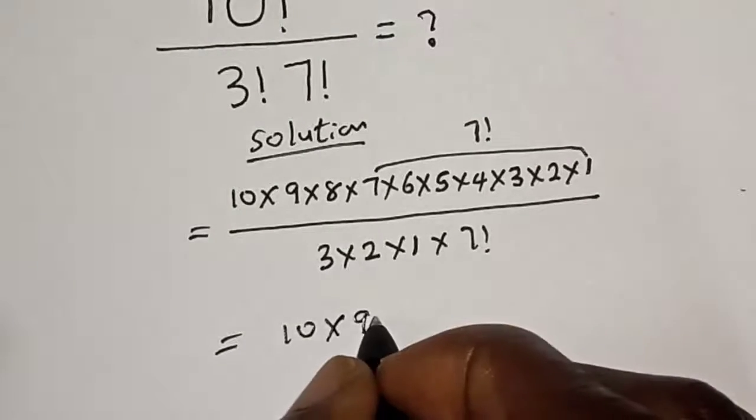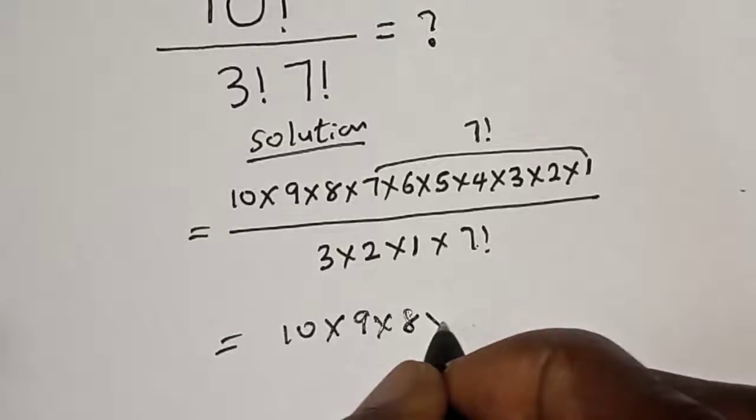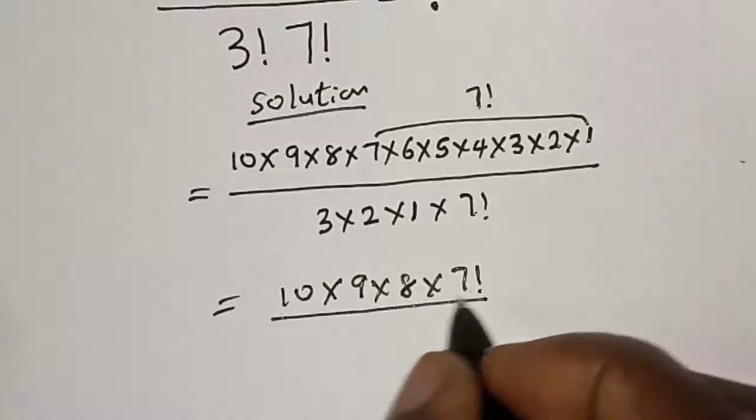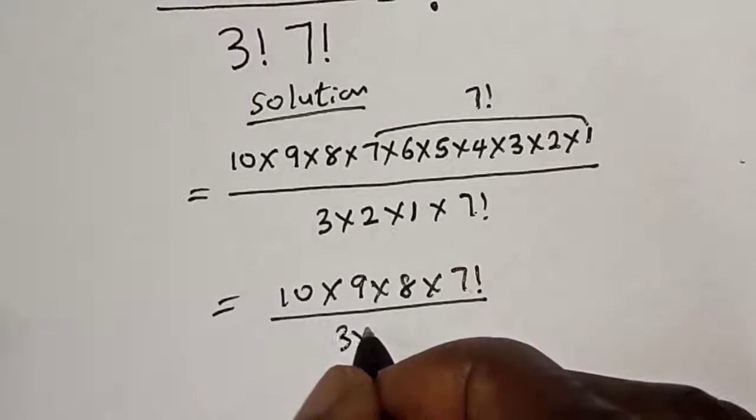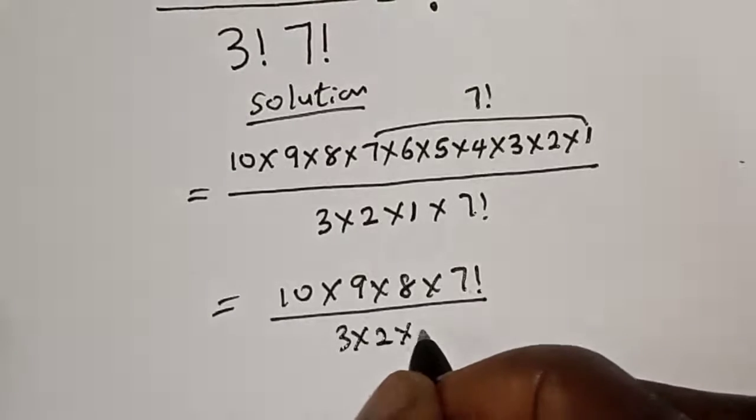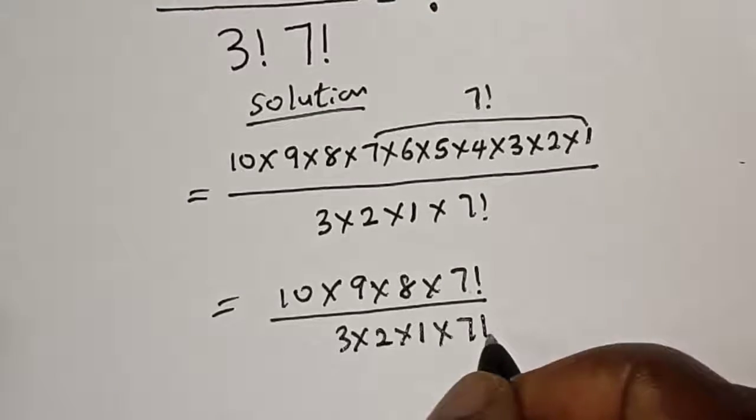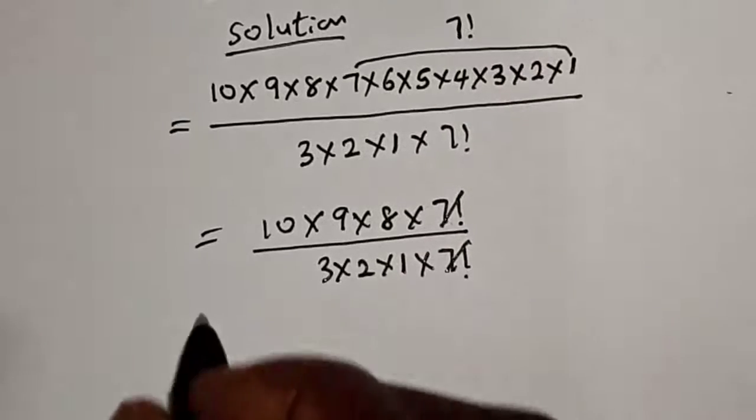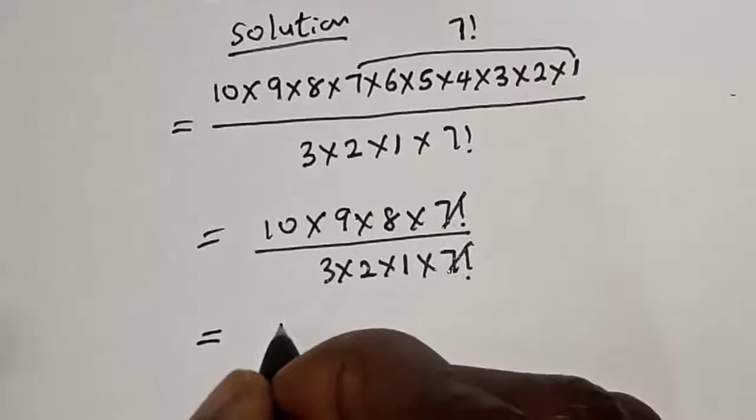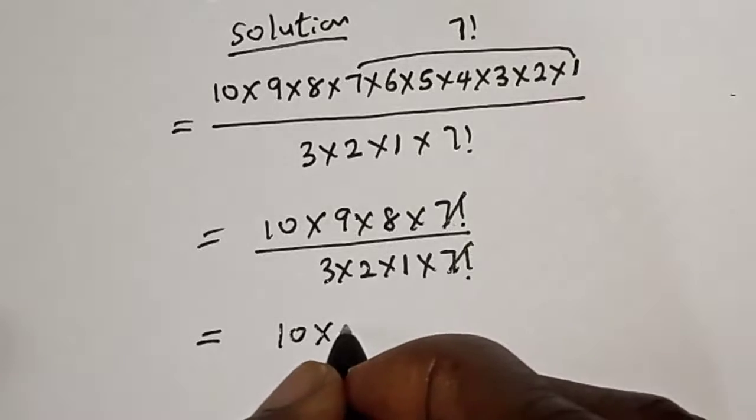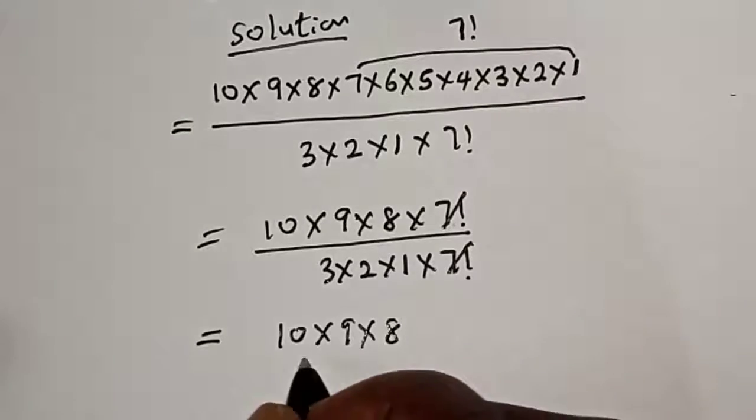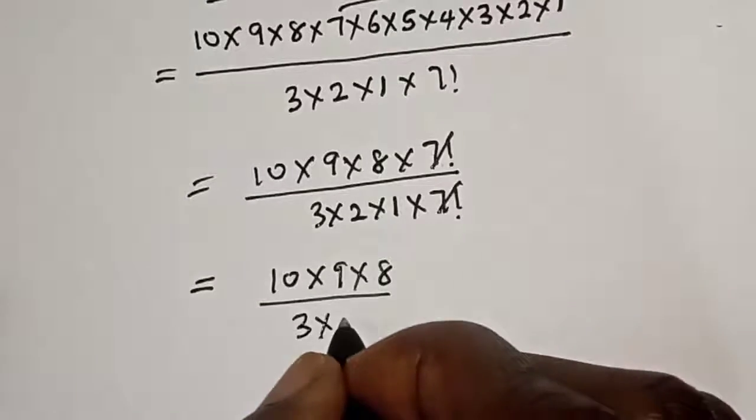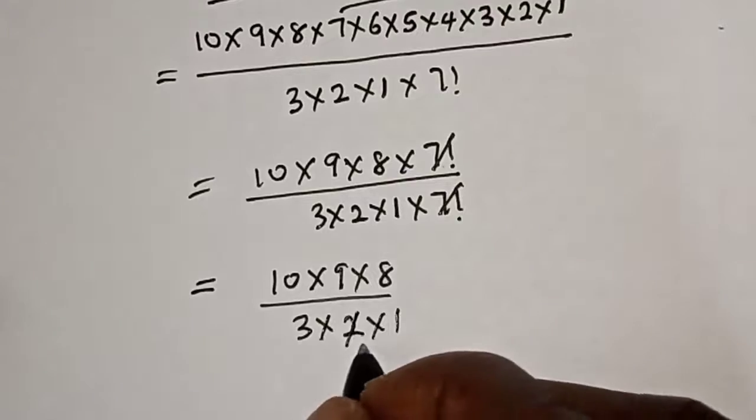So we have 10 times 9 times 8 times 7 factorial over 3 times 2 times 1 times 7 factorial. This 7 factorial will cancel this 7 factorial. We have 10 times 9 times 8 over 3 times 2 times 1.